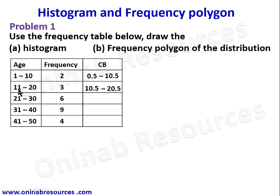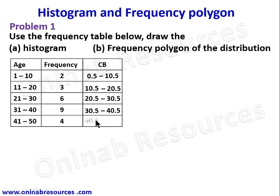This upper class boundary automatically becomes the lower class boundary of the next class interval. For that interval, 30 plus 31 divided by 2 gives 30.5, so the class boundary is 20.5 to 30.5. Continuing, 40 plus 41 equals 81, divided by 2 gives 40.5, and the final interval goes to 50.5.